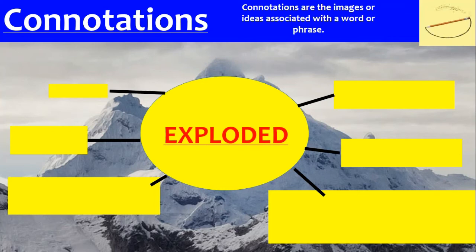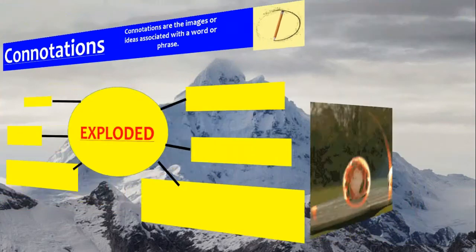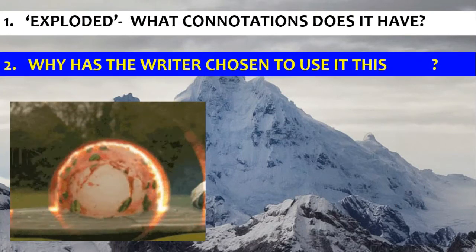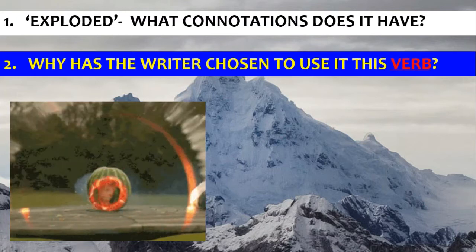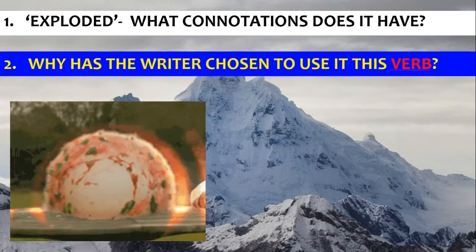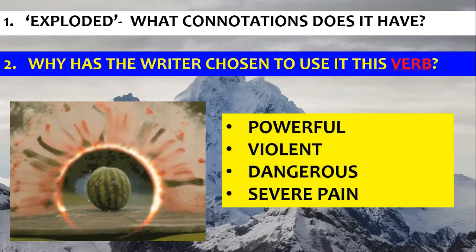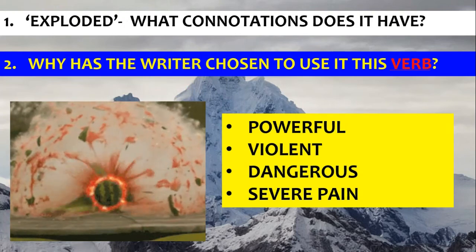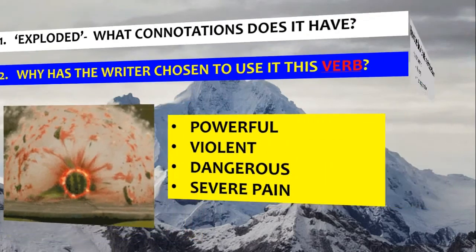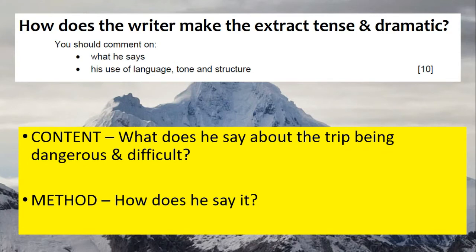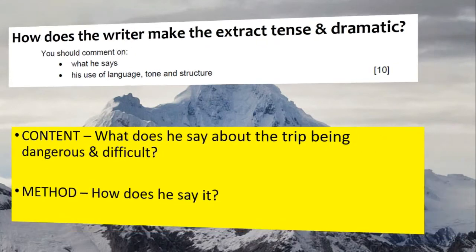Let's look at 'my knee exploded' — again, a verb. What connotations does it have, and why has the writer chosen it? His knee wasn't just injured — it didn't just hurt — his knee exploded. The writer wants us to think of powerful, violent, dangerous pain, and to understand how severe it is. So again, the question is: how does the writer make the extract tense and dramatic? We've got to say what the writer does and then how — what techniques are used.